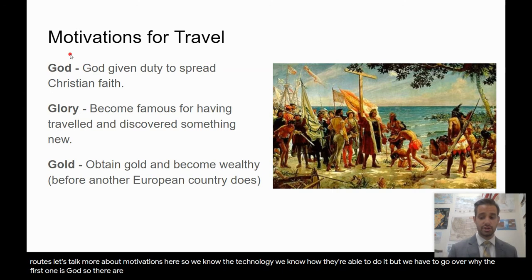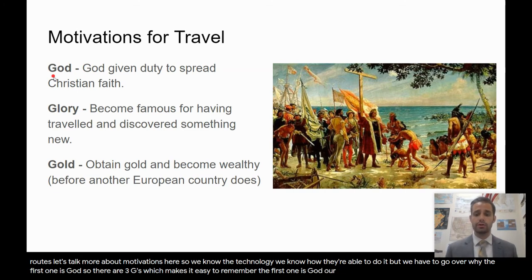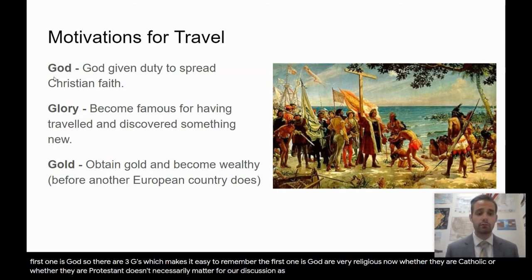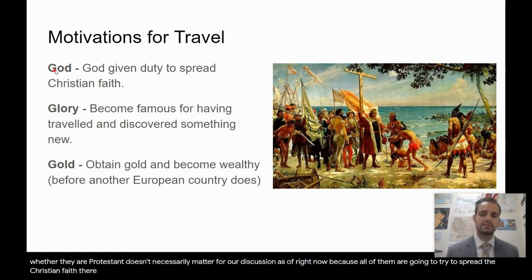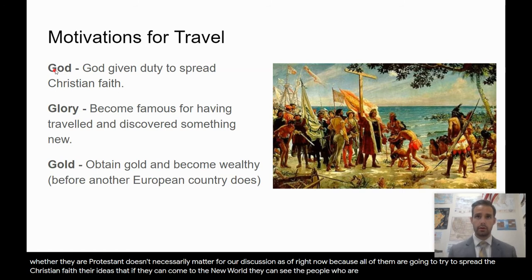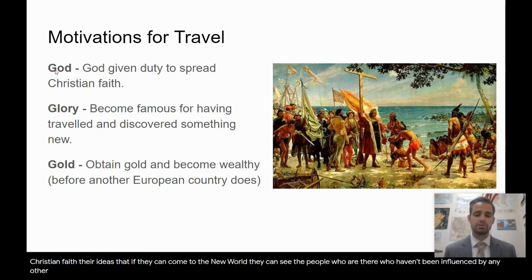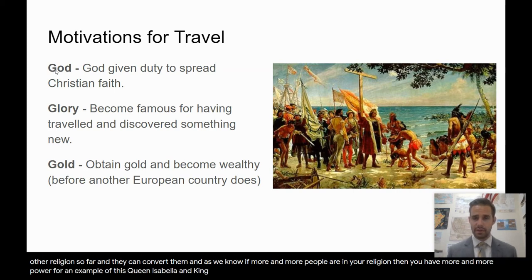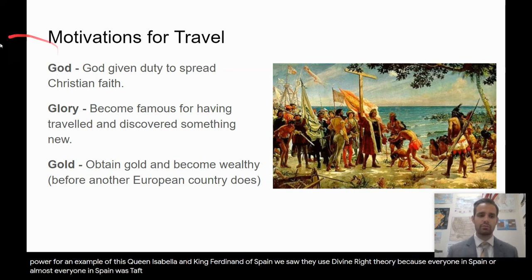The first motivation is God. There are three G's, which makes it easy to remember. Europeans, as we know, are very religious — whether Catholic or Protestant, all of them are going to try to spread the Christian faith. Their idea is that if they can come to the new world and find people who haven't been influenced by any other religion, they can convert them. More people in your religion means more power. Queen Isabella and King Ferdinand of Spain used divine right theory because almost everyone in Spain was Catholic.